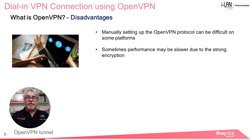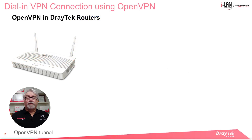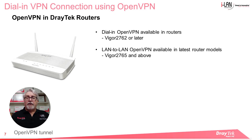Connection speeds can suffer due to the strong encryption used, but that shouldn't be too noticeable for most NBN connections. Another issue is that third-party applications are needed to make it run. But even with these drawbacks it certainly has a lot of fans, and there's a plethora of technical information out there if you'd like more detail. OpenVPN was introduced into DrayTek routers a couple of years ago. Dial-in OpenVPN became available from the Vigor2762 series, while LAN-to-LAN VPNs using OpenVPN became available in the Vigor2765 and above. In this webinar, we'll just be looking at creating a dial-in OpenVPN tunnel.